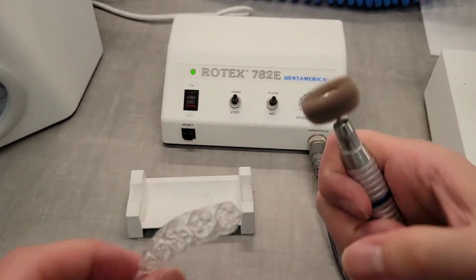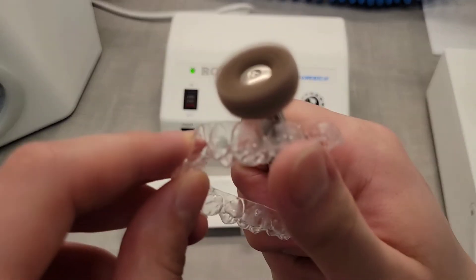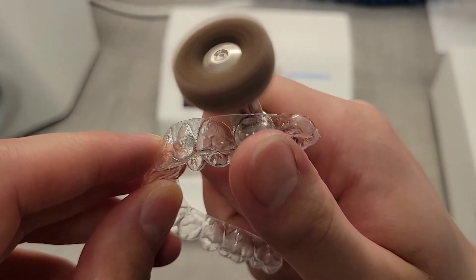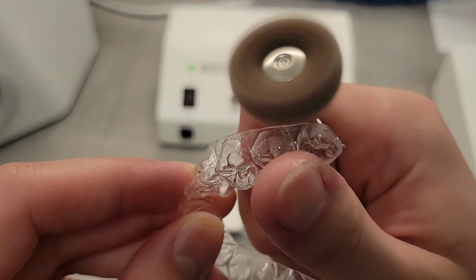To polish, have a good grip on the aligner with one hand and use your thumb as support. Use long, smooth strokes along the edges of the aligner, never taking your thumb off the aligner.